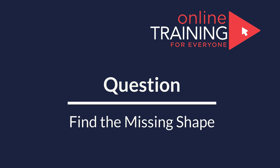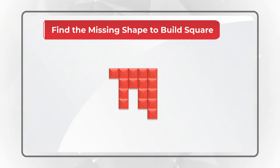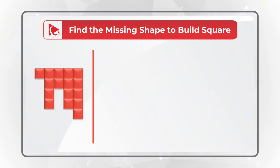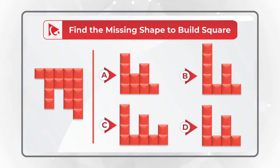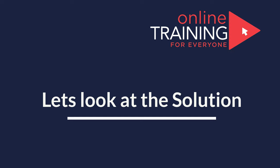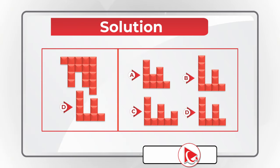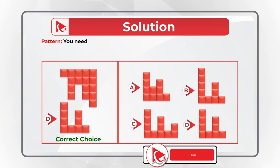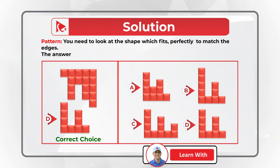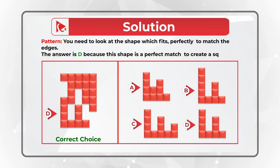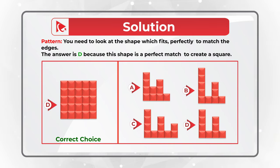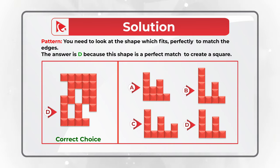Here's a very interesting question to test your spatial reasoning. You're presented with a partial square and you need to find the missing shape to build the full square. You have four different choices: A, B, C, and D. The correct answer is choice D. To get there, you look at the shape which fits perfectly to match the edges. Since this is a 5×5 square, choice D is the perfect shape because it matches perfectly to create a full square.